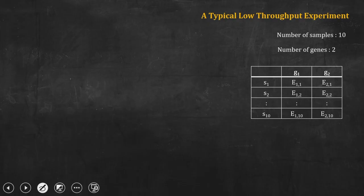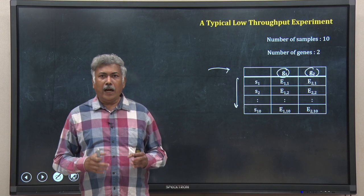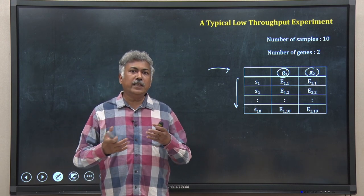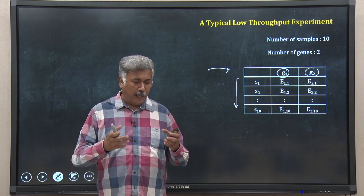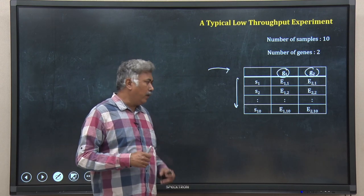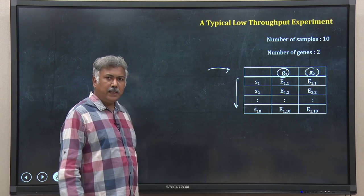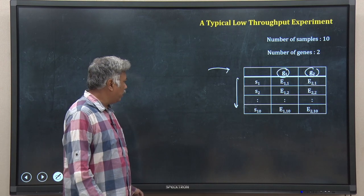So this is my table — gene 1 is one gene, gene 2 is another gene, and you have the samples from sample 1 to sample 10. Now I want to visualize this, I want to see the gene expression behavior of these ten samples and I have measured for two genes. I can represent this data in a scatter plot — very easy to do, you have already learned how to plot a scatter plot.